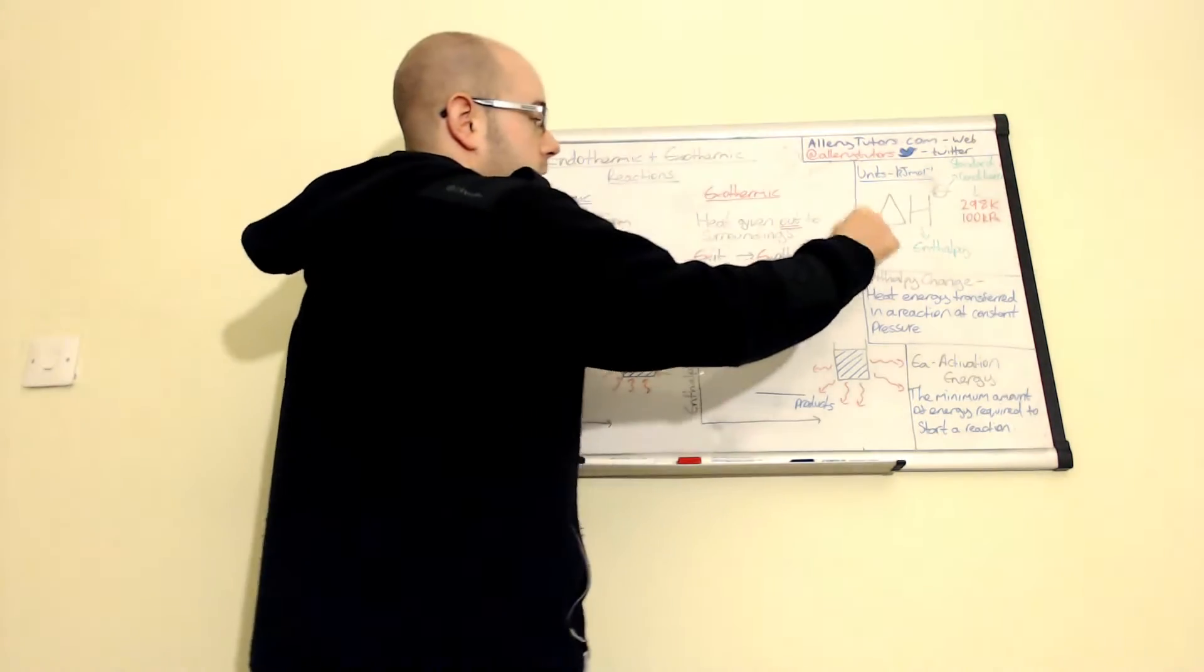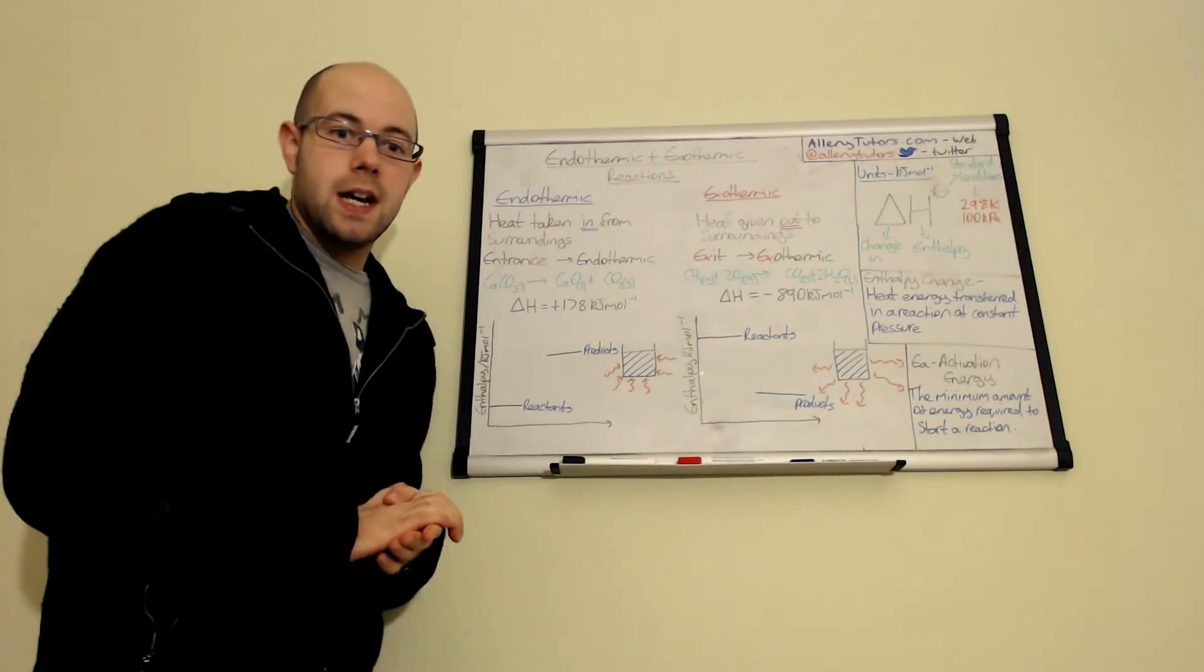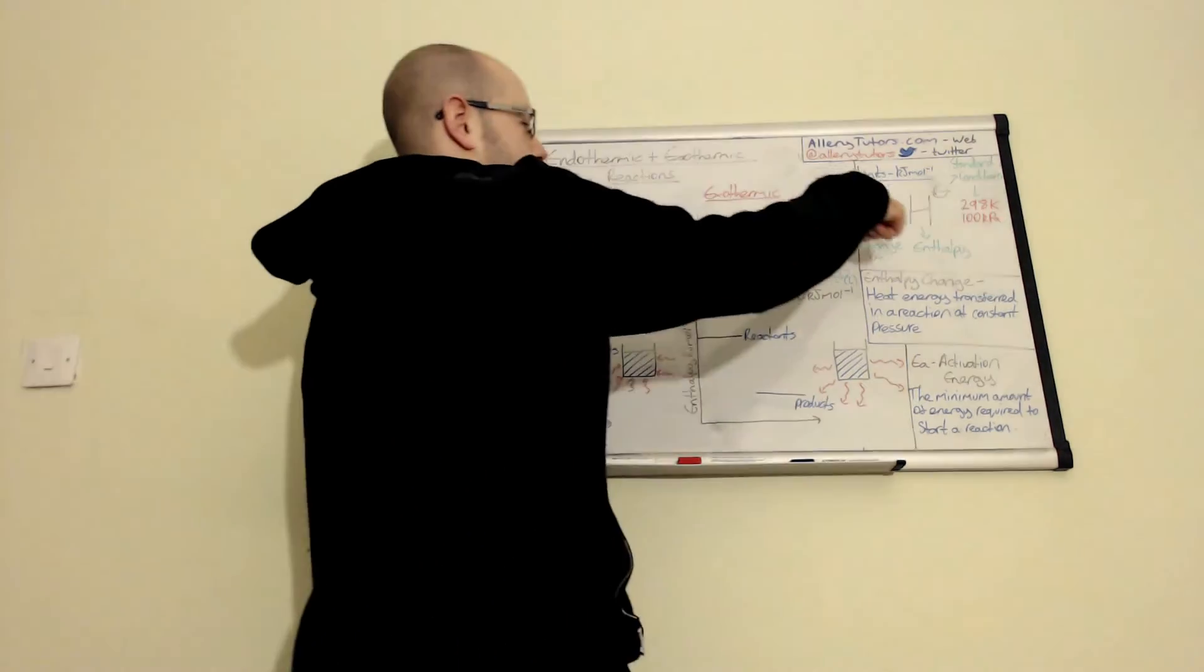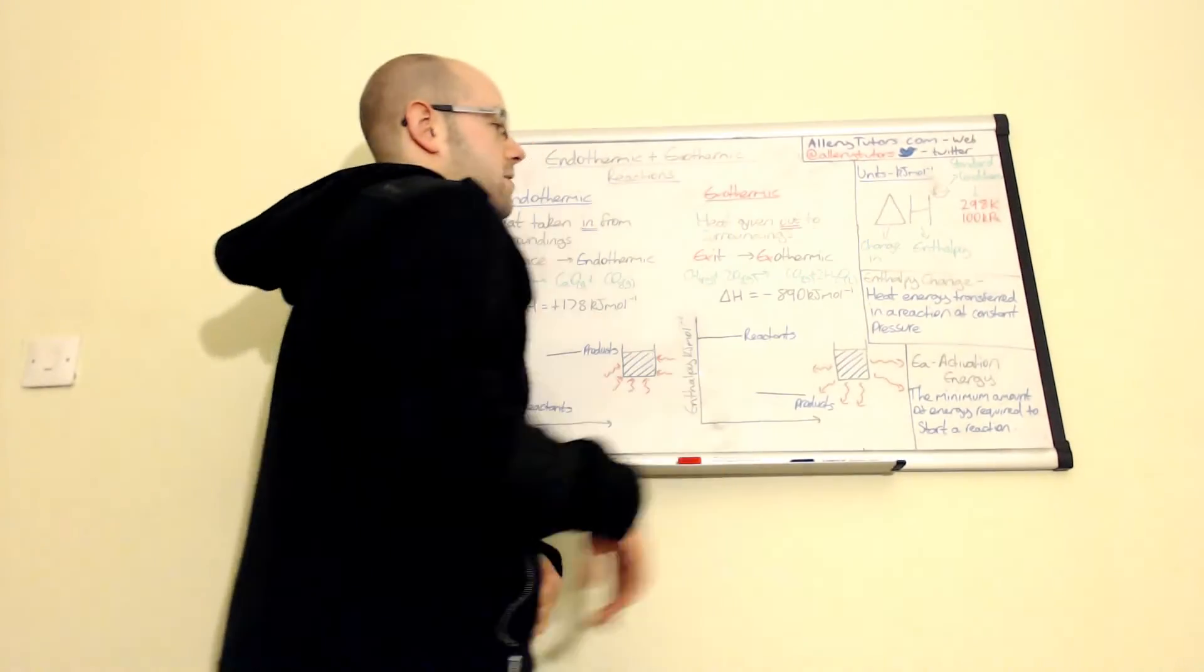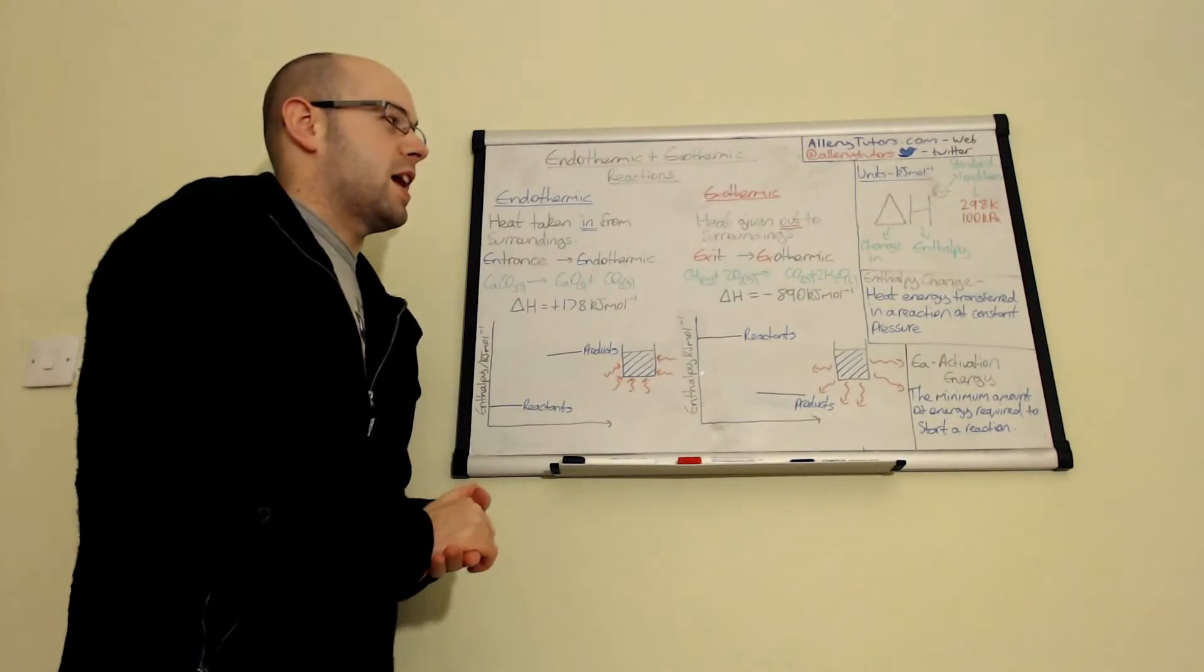The delta H bit, the delta bit is basically the Greek letter D, which stands for change in. So we do that as a triangle. And enthalpy is a capital H, that's what we represent enthalpy out of.